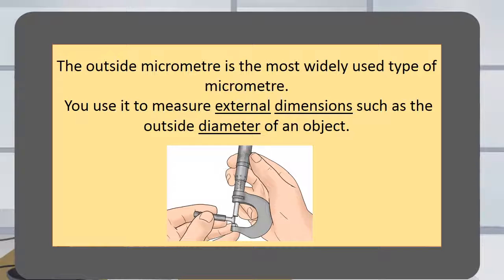The outside micrometer is the most widely used type of micrometer. You use it to measure external dimensions such as the outside diameter of an object.